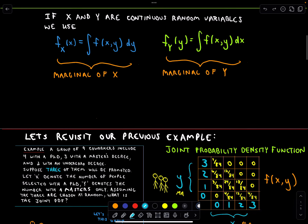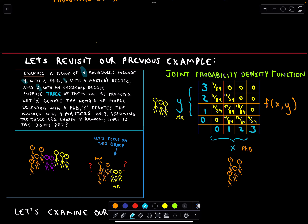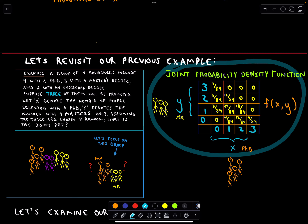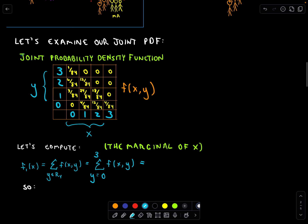Let's put this in the context of an example. Previously, I had computed a joint probability density function. In that example, we had a group of nine co-workers: four had a PhD, three had a master's, and two had an undergraduate degree. Three of those people were going to get promoted at random. We let x denote the number of people with a PhD that got promoted, and y denote the number of people with a master's that got promoted. From that, we made this joint probability density function.